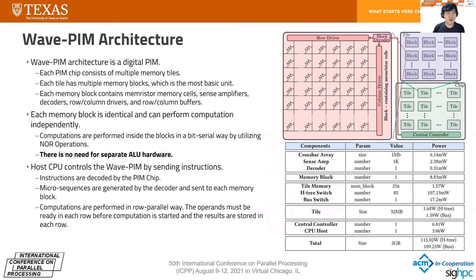Our WavePIM architecture consists of a PIM chip with multiple memory tiles, shown in the green box. Each tile has multiple memory blocks, shown in purple. Each memory block contains memory cells, sense amplifiers, decoders, drivers, and buffers. Each memory block is identical and can perform computation independently. The computation inside these memory blocks is done in a bulk-bitwise serial way utilizing NOR operations — no spare ALU hardware is needed. The host CPU controls WavePIM by sending instructions, which are decoded by the PIM chip. Micro-sequences are generated and sent to each memory block, and computation proceeds in parallel once operands are ready in each row. Results are stored back in each row.